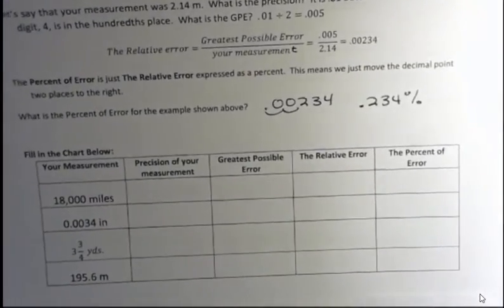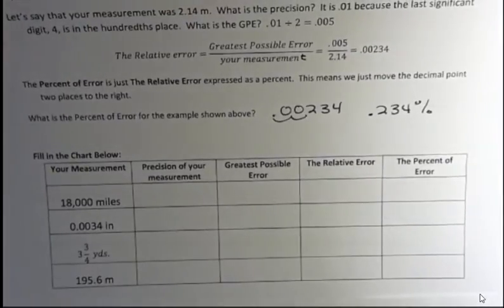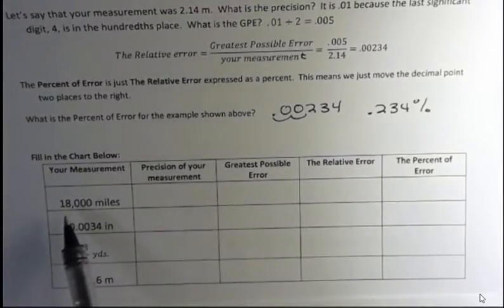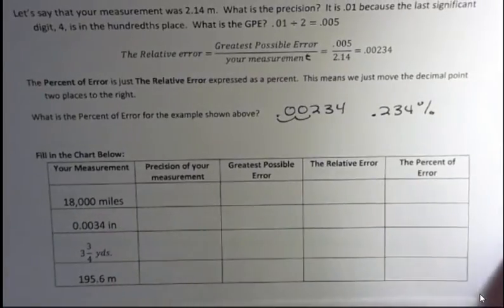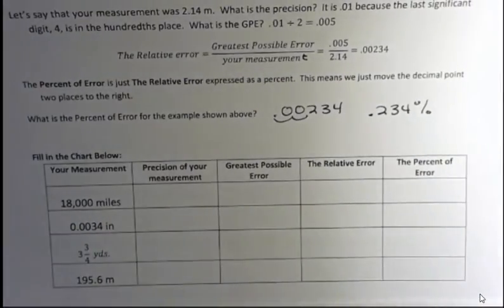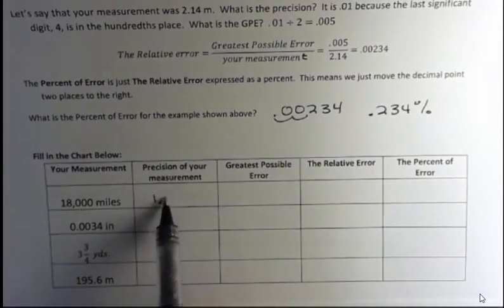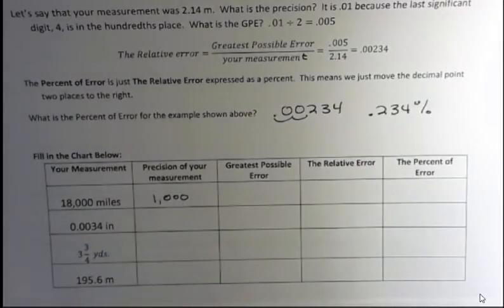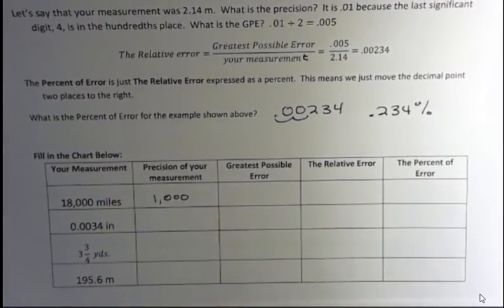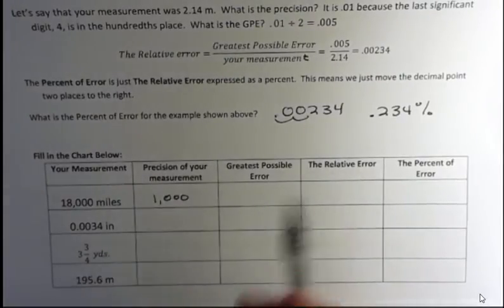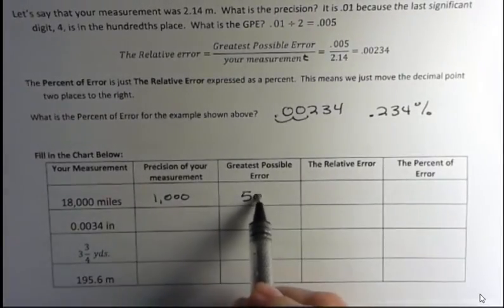Okay, so let's look at the chart here that I have for examples. If you have 18,000 miles, what is the precision of your measurement? Well, the precision is to the one thousands place because that's where your last significant digit was. What's the greatest possible error? Greatest possible error is your precision divided by two. One thousand divided by two is five hundred.